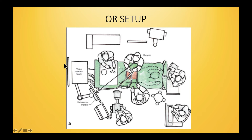The OT setup is like any arthroscopic setup, with the patient lying prone or lateral, the surgeon standing on the side of surgery, and the screen and monitor on the opposite side. The image intensifier is used to localize levels, with its screen mounted on the opposite side.